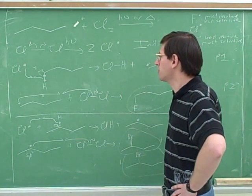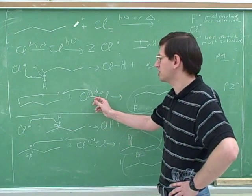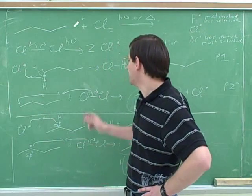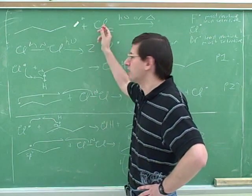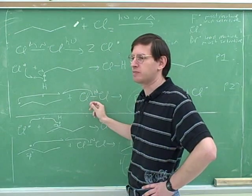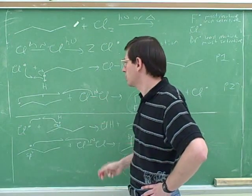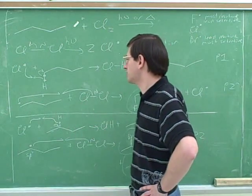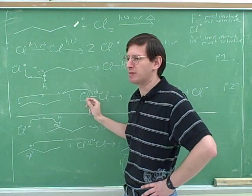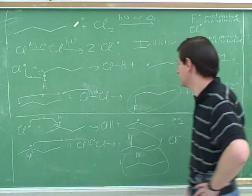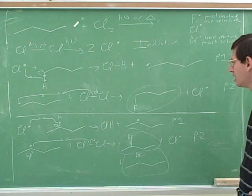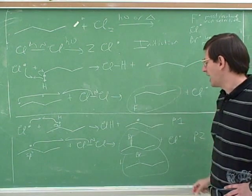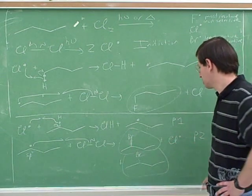One of the most common mistakes in radical halogenation is in the second propagation step: students remember they need to attach a chlorine, but they mistakenly attach the chlorine radical instead of the non-radical chlorine from Cl₂. In a propagation step, a radical attacks a non-radical. It's only in a termination step that a radical would attack another radical. Also watch for all the different positions where the halogen could attack, and watch for whether you're making a primary, secondary, or tertiary substitution.